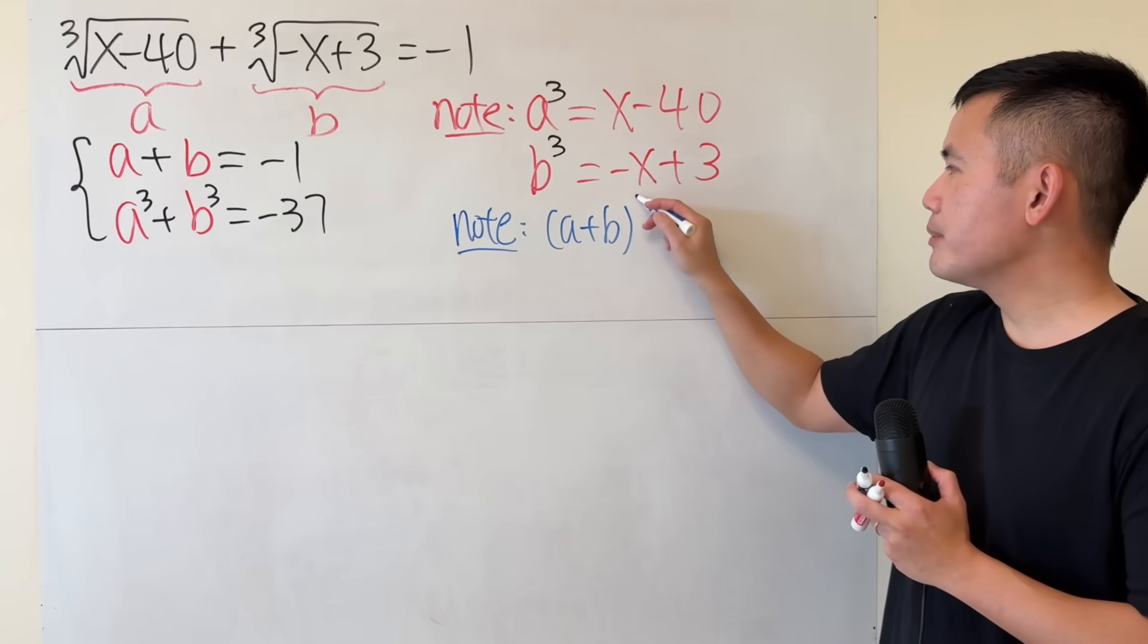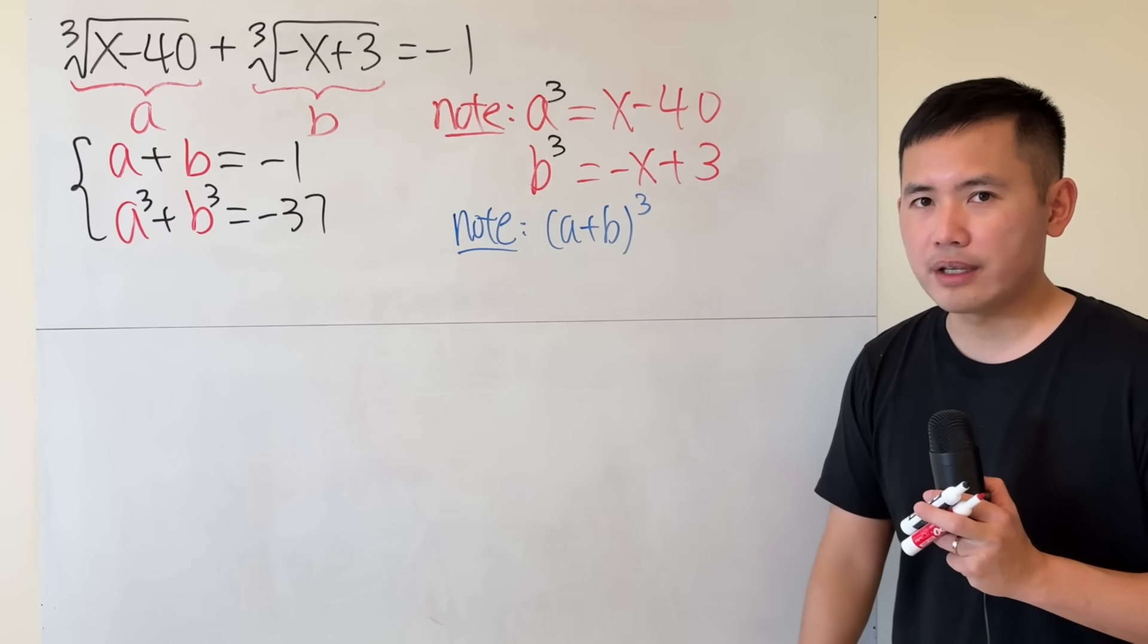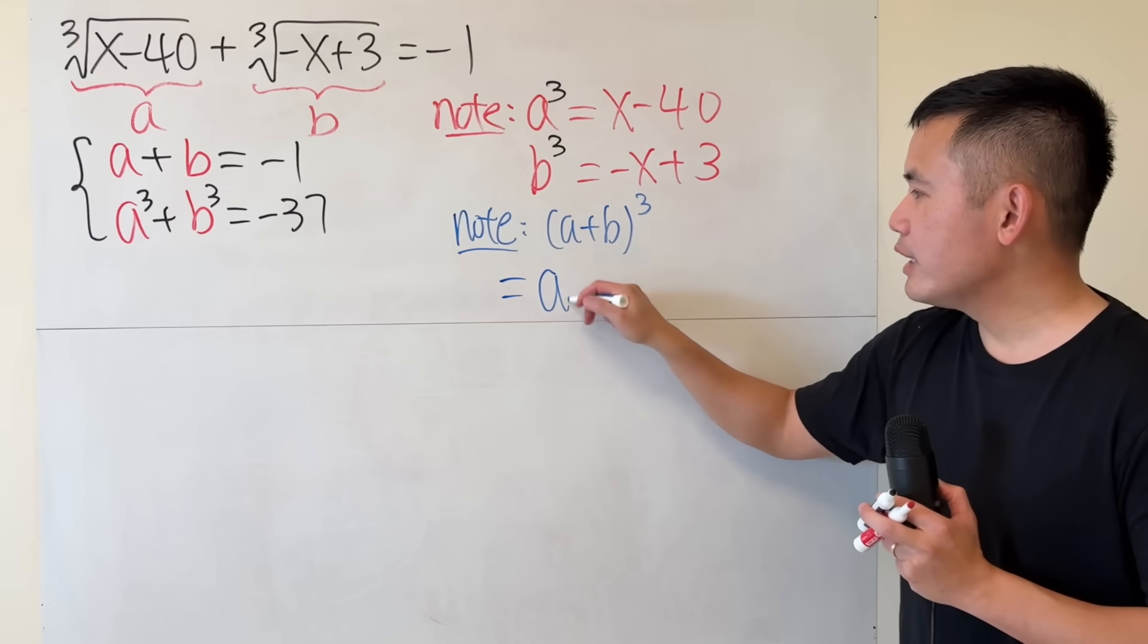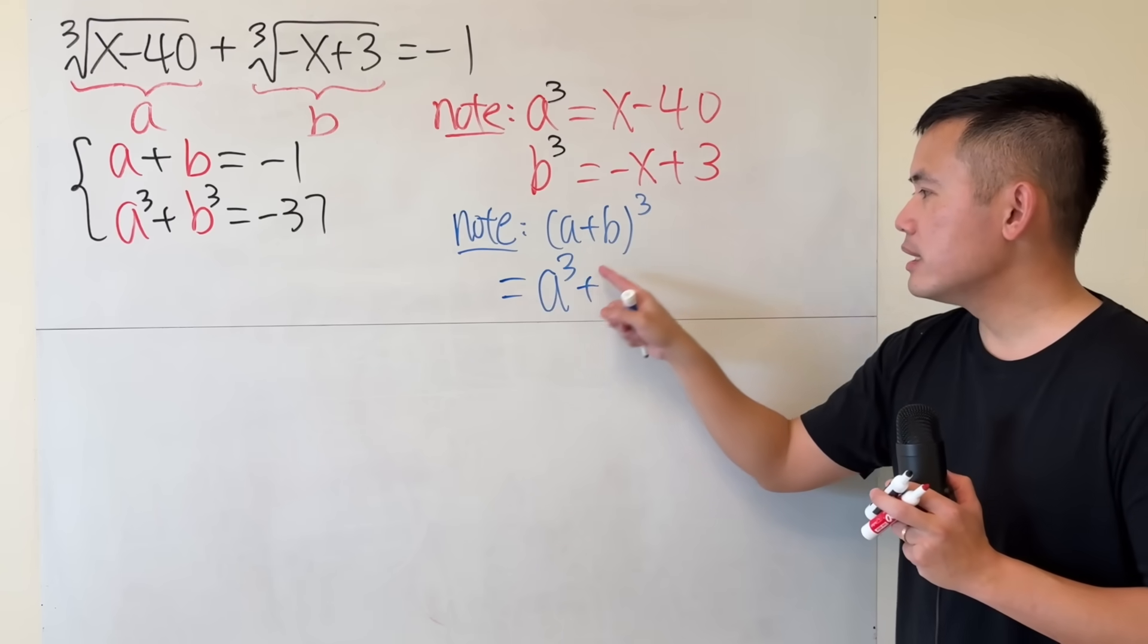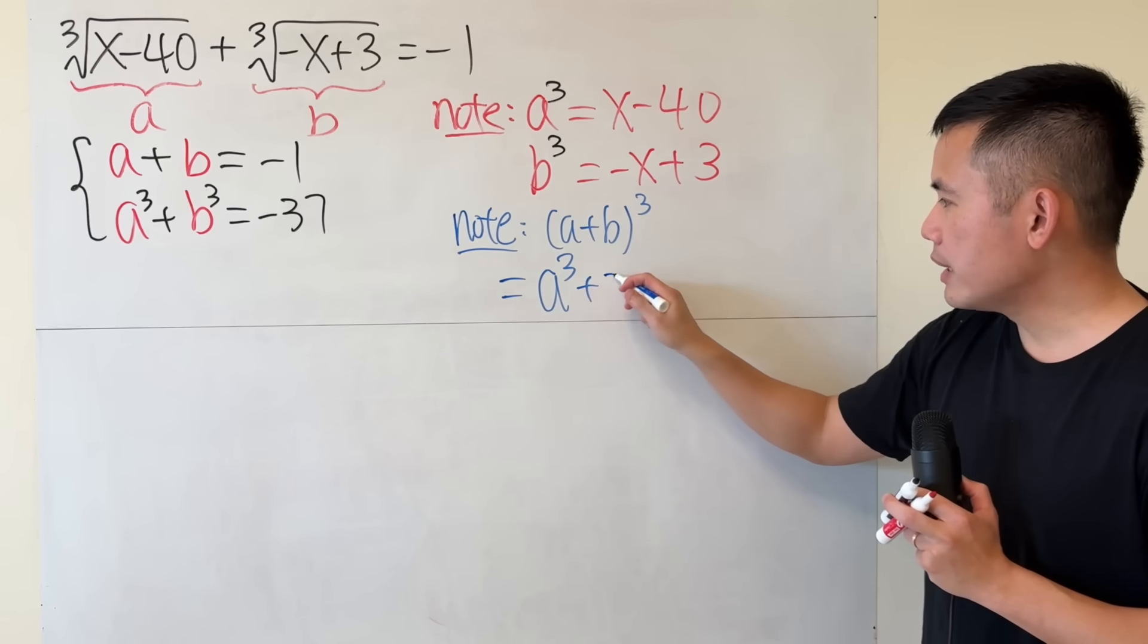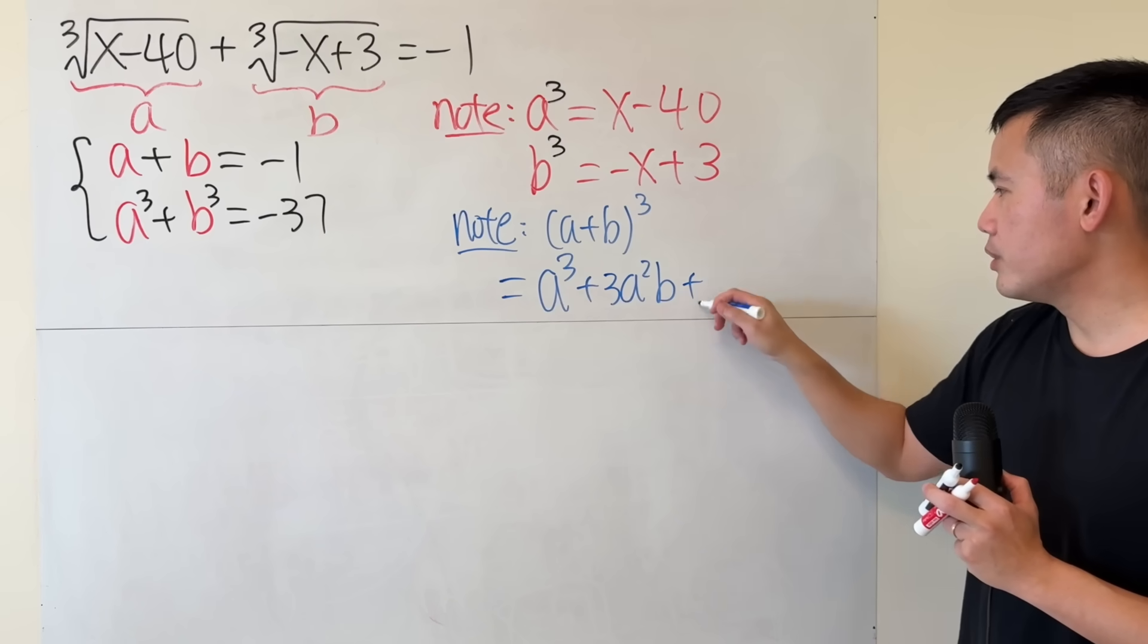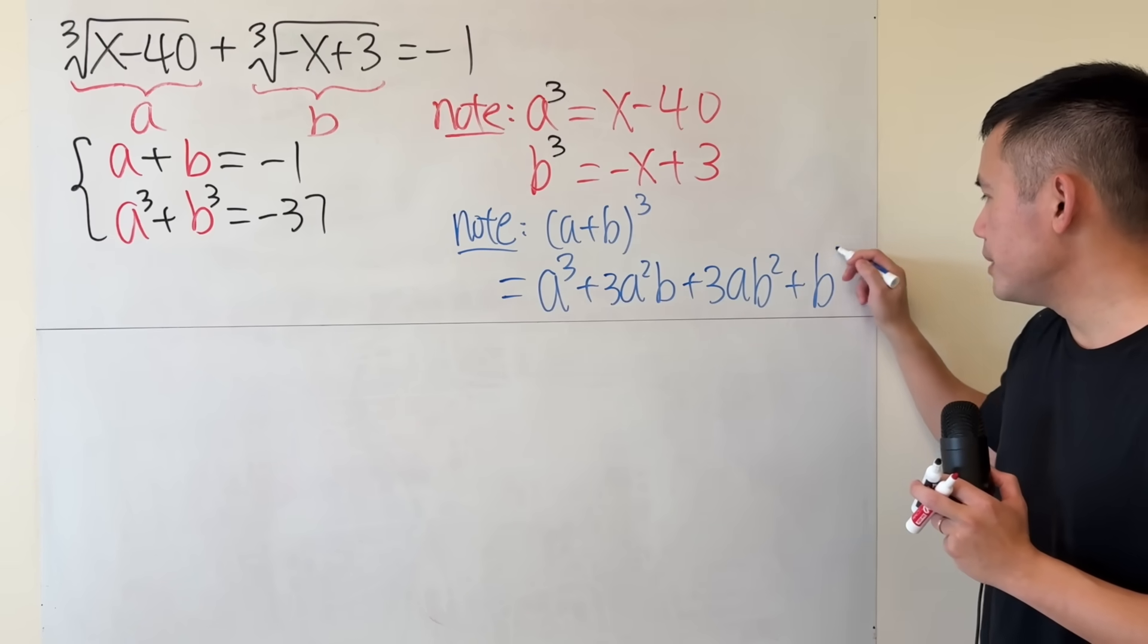a plus b. I'm going to raise that to the third power. And you can expand this by using the Pascal's triangle or the binomial theorem. You will get a cube, and then the next coefficient is 3. Remember, it's 1, 3, 3, 1. And then the power of a will go down by 1, and then the power of b will go up by 1. And then you'll continue. So 3a squared b, 3ab square, and lastly, b cube.